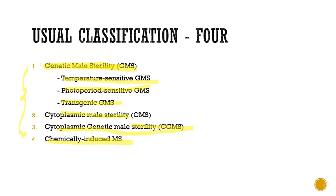In cytoplasmic male sterility, the genes responsible for sterility are present in the cytoplasm — specifically in the mitochondria or inside the chloroplast. In cytoplasmic genetic male sterility, the male sterile genes are present in both the nucleus and the cytoplasm, with both contributing to male sterility. In chemically induced male sterility, certain artificial chemicals are used to induce male sterility.